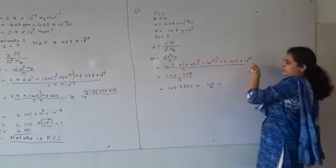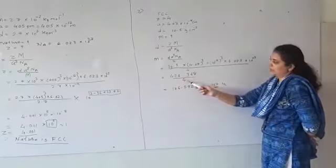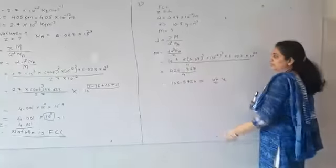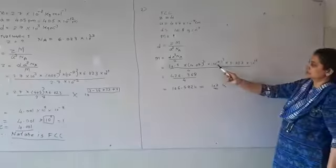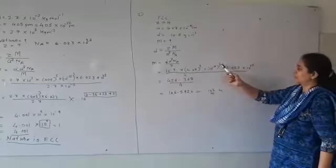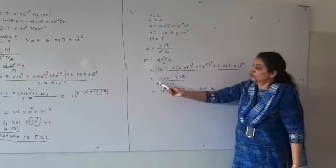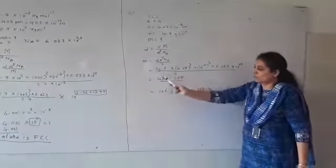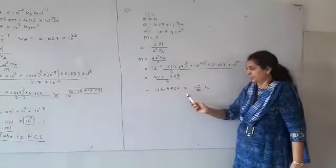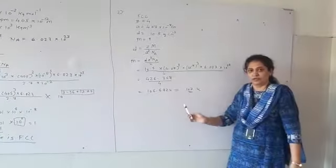When you solve the numerator, the answer is 726.3 divided by 4. Here also you follow the same technique: non-exponent comes on one side and exponent on another side. So 10⁻⁸ power of 3 becomes 10⁻²⁴ plus 23, so it becomes 10⁻¹. When you solve this whole thing, the answer comes out to be 106.59 units. When you round it off, it will become 107 units. Thank you.